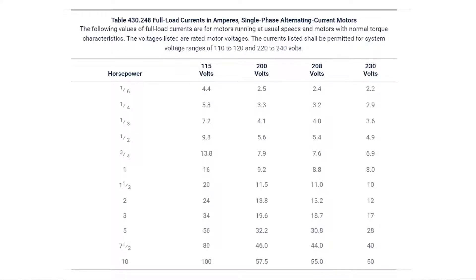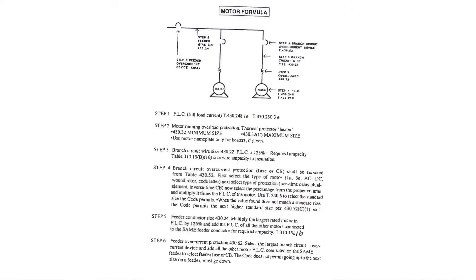Okay, now we're going to turn in our codebook to Article 430.248, and it's a table. You've got your glued-in piece underneath it, right? Your six-step format on motor calculations. This is going to size the different components for a motor.